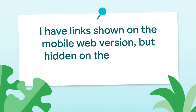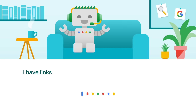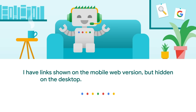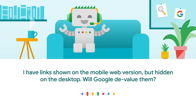Ryan asks: if a homepage has links that are shown on the mobile version but hidden behind a JavaScript toggle on desktop and not included in the HTML unless clicked, will Google devalue them? Hi Ryan. With mobile-first indexing, we use the mobile version of a page as a basis for indexing and for discovering links. If the mobile version has the full content, you're all set. It feels surprising to me that you'd have less content on desktop, but I guess you have reasons for that.